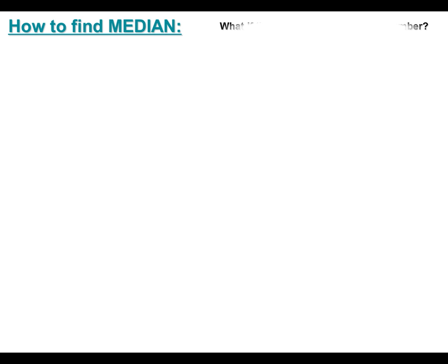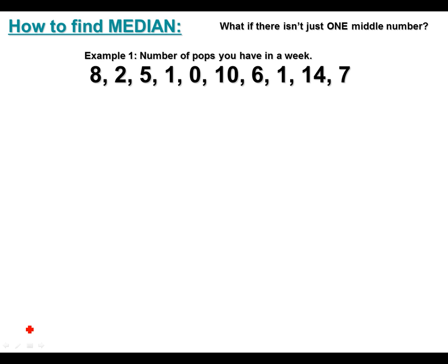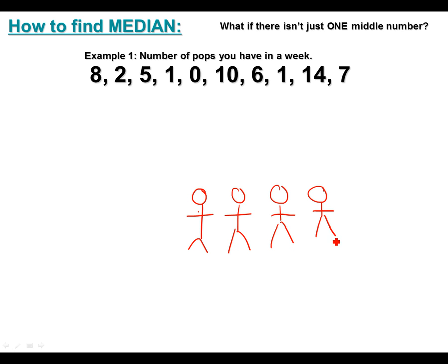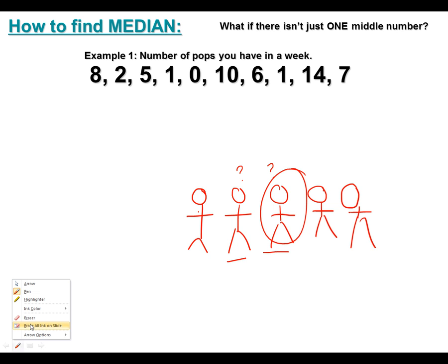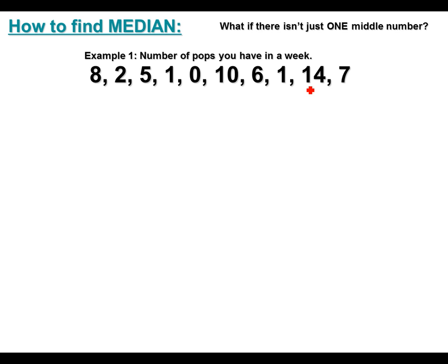Here's another median example. What if there isn't just one middle number? That happens when you have an even set of data. If you have people standing in a line and you say 'I want to pick the middle person,' there might not be just one person in the middle. If we added another person then yes, we could say this person is in the middle. We have to make sure we know whether we're dealing with an odd or an even set of data to know whether there's a true middle or not.